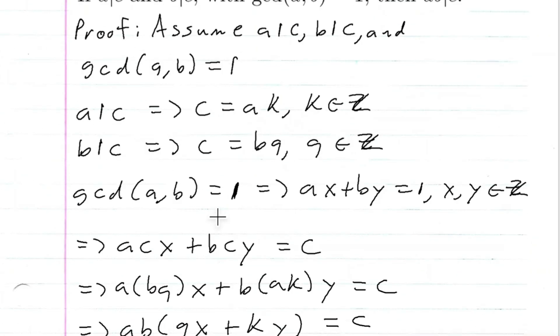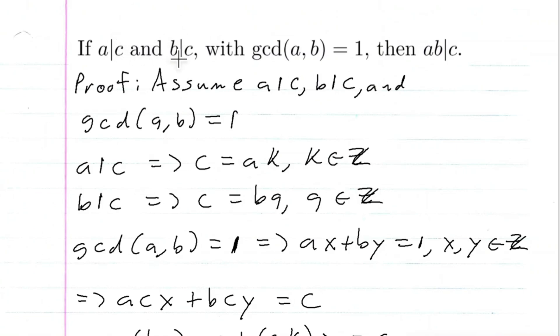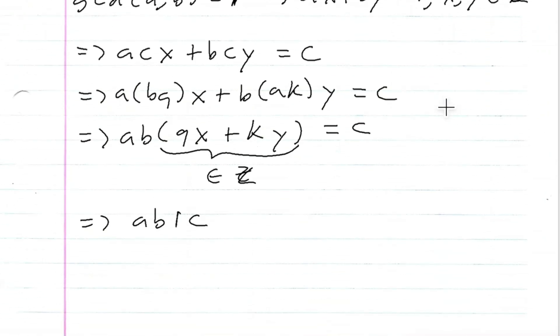And that's what I set out to do, right? I wanted to show that if A divides C and B divides C, with the fact that GCD of A and B is one, then the product AB divides C. And that's exactly what I showed.